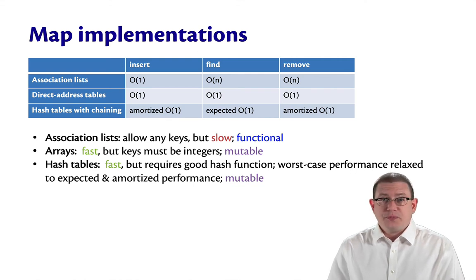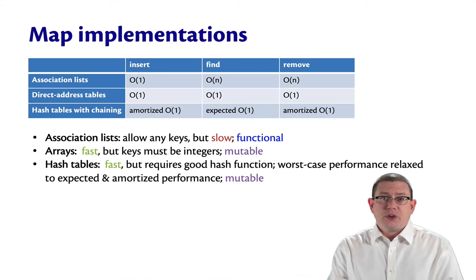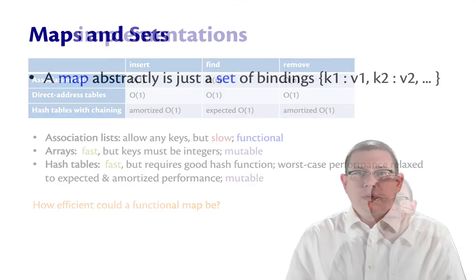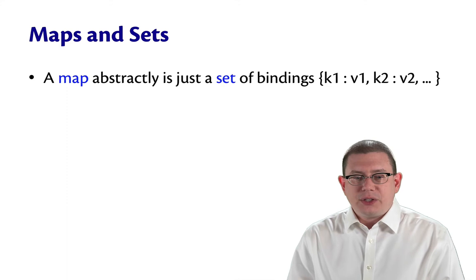Hash tables are also mutable. Could we do at least as well or better with a functional data structure? Well, we're probably not going to do any better than constant time performance. But how efficient could a functional map be? That's what we're going to explore next. We're going to do it in the context, though, of sets.